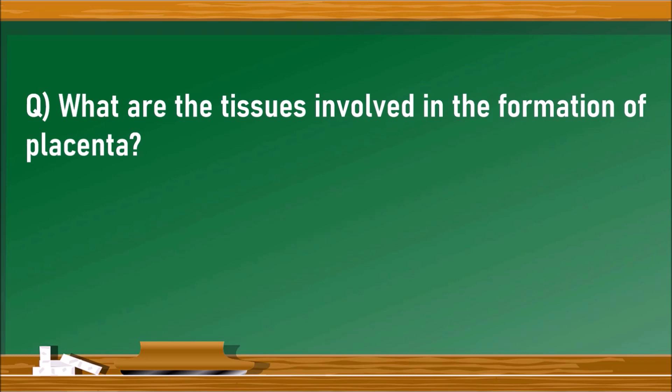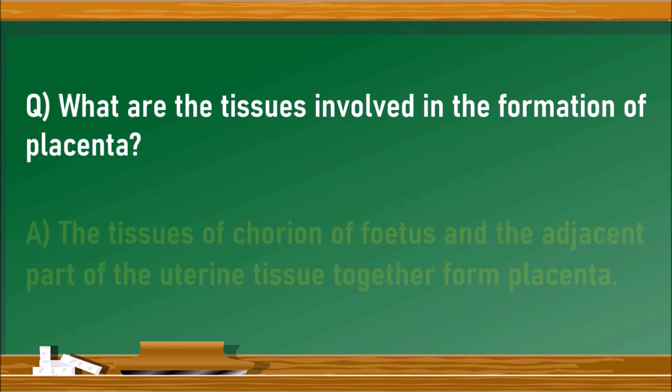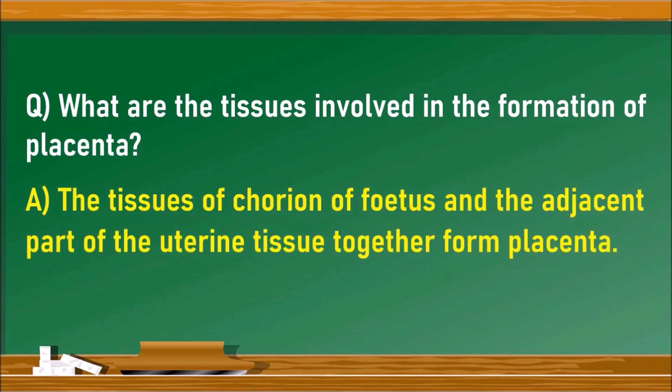Next question: what are the tissues involved in the formation of the placenta? The placenta is a tissue formed during the development of the embryo in the mother's womb. It is formed by the tissues of the chorion of the fetus and the adjacent part of the uterine tissue. The chorion is the membrane surrounding the fetus, so some part of the chorion as well as the tissues present in the uterine wall are involved.